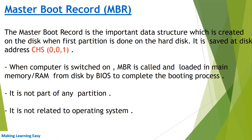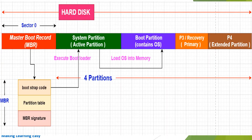Here you can see a diagram which is basically the view of the hard disk. You can see four partitions here, and before the partitions you can see one marked red block which is denoting the Master Boot Record.